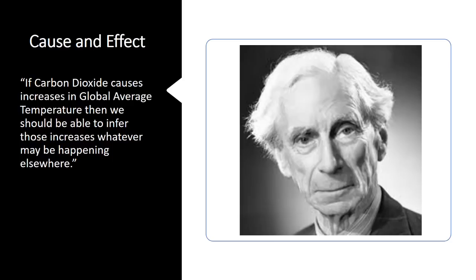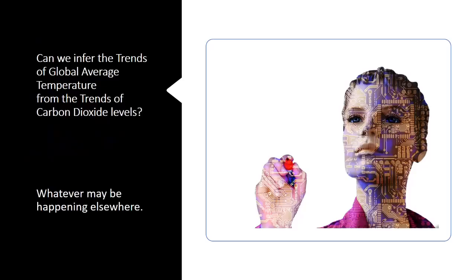In other words, if carbon dioxide causes increases in global average temperature, then we should be able to infer those increases, whatever may be happening elsewhere. So when we go on to examine the source of data, will we be able to infer the trends of global average temperature from the trends of carbon dioxide levels, whatever may be happening elsewhere? Let's see.